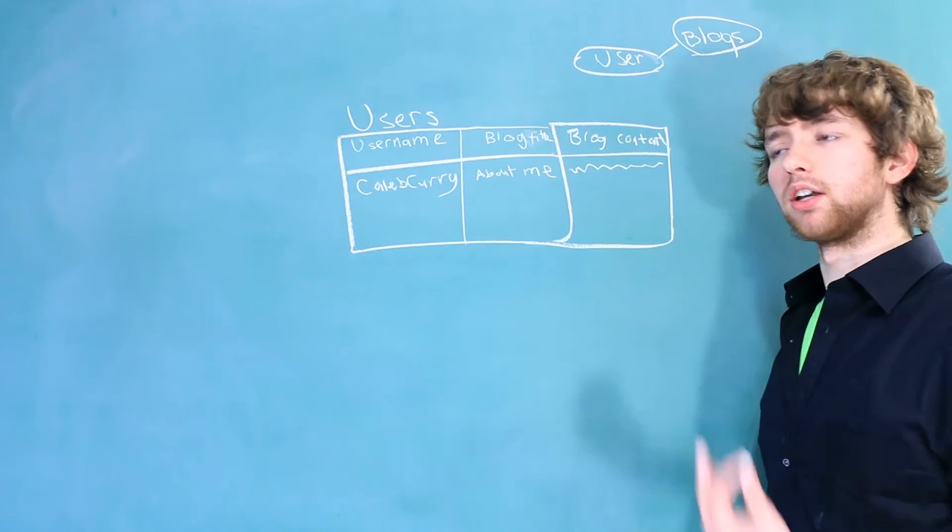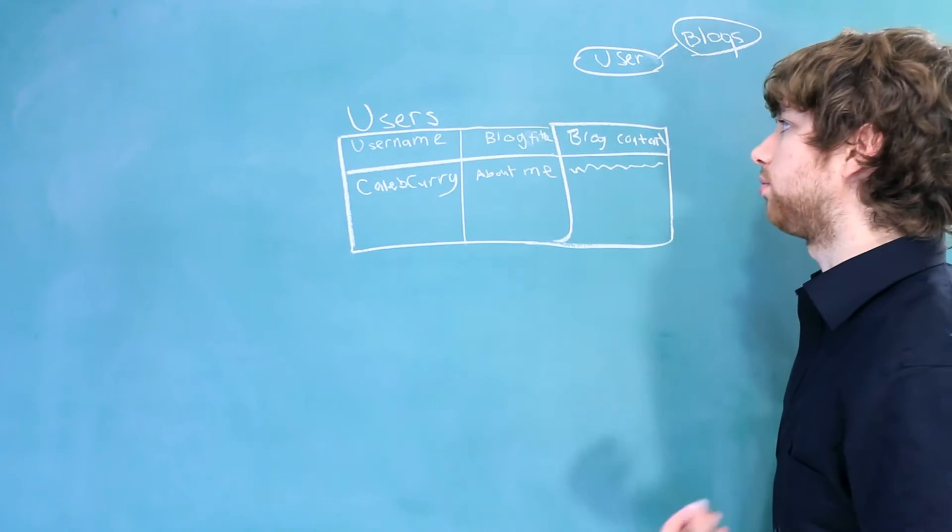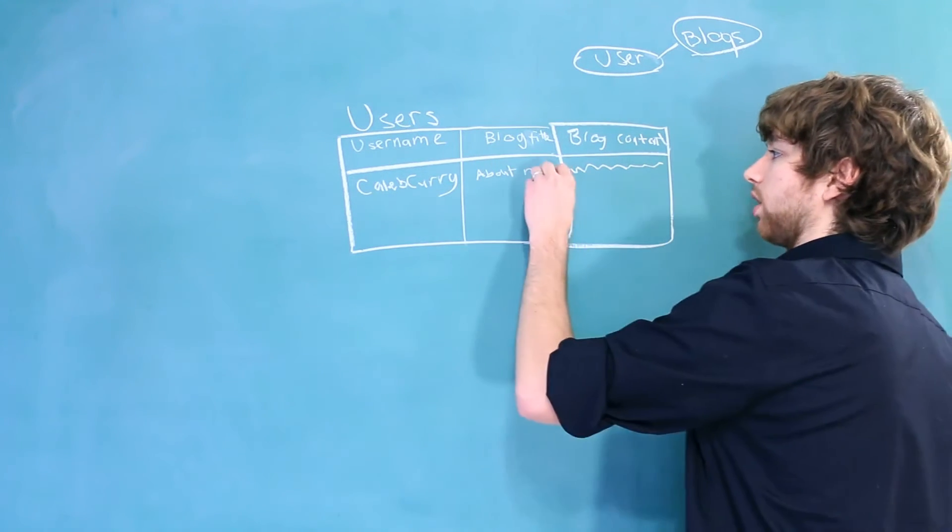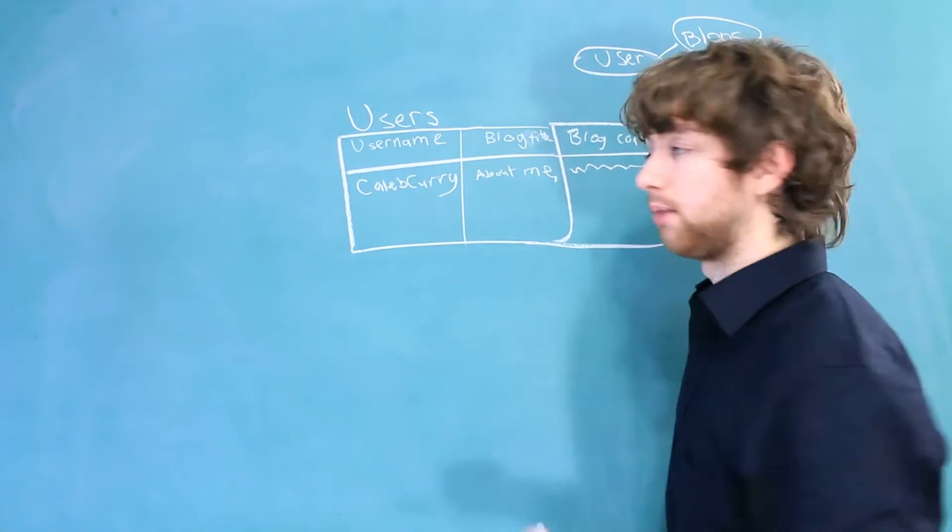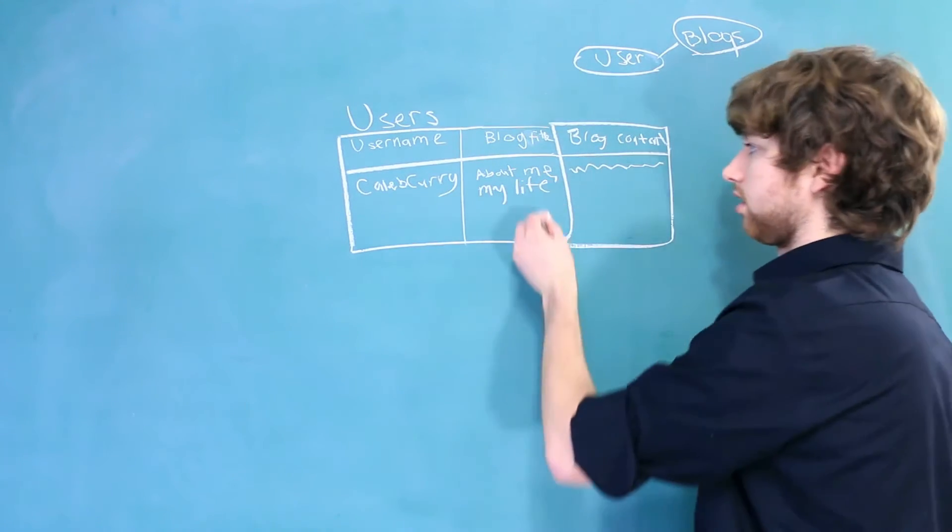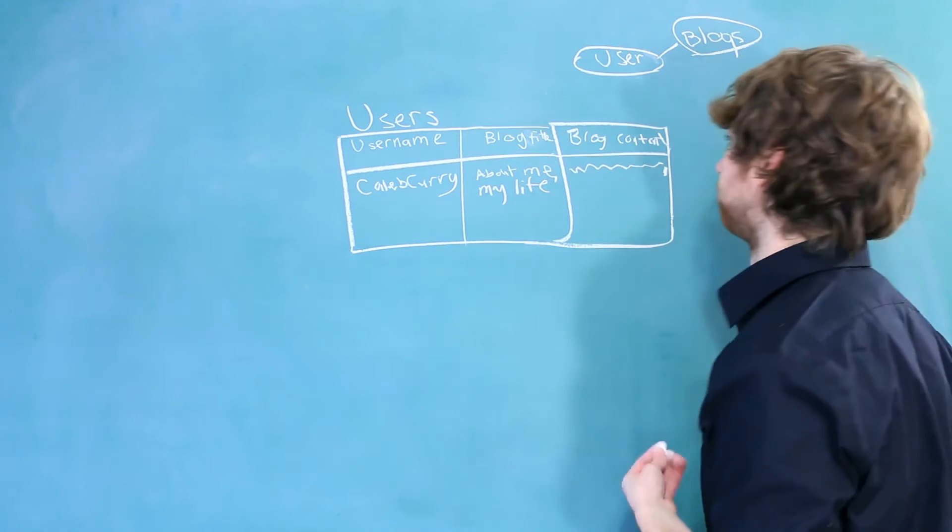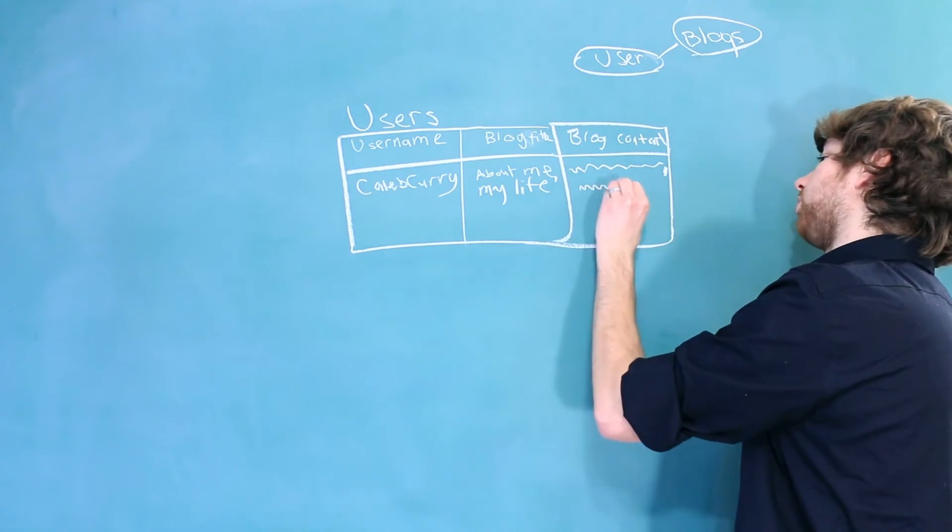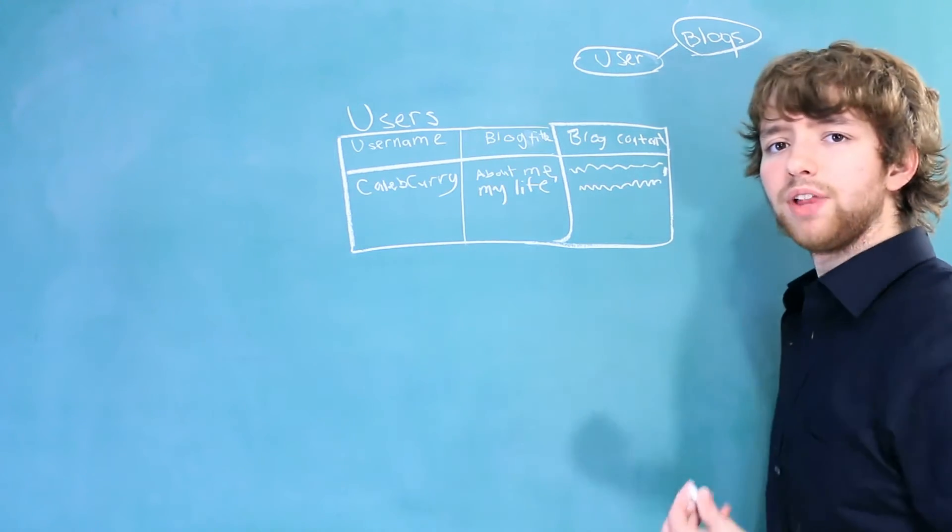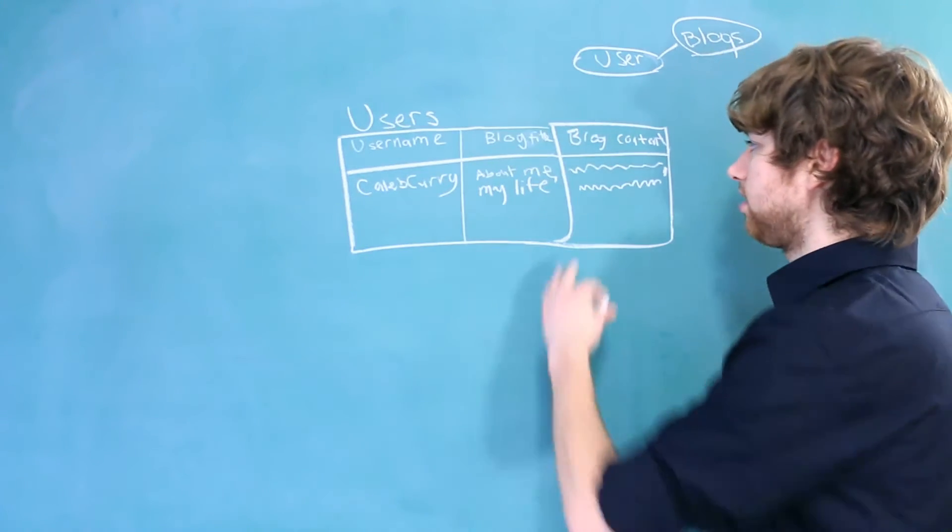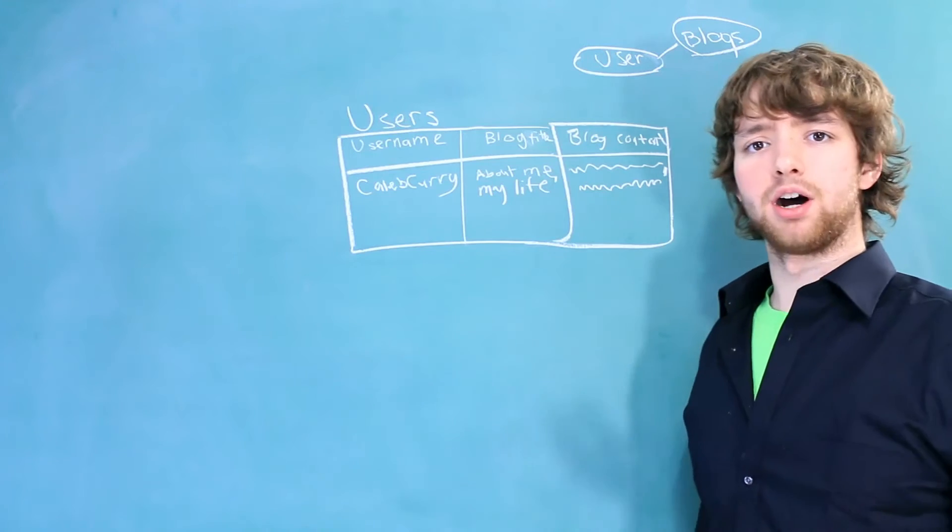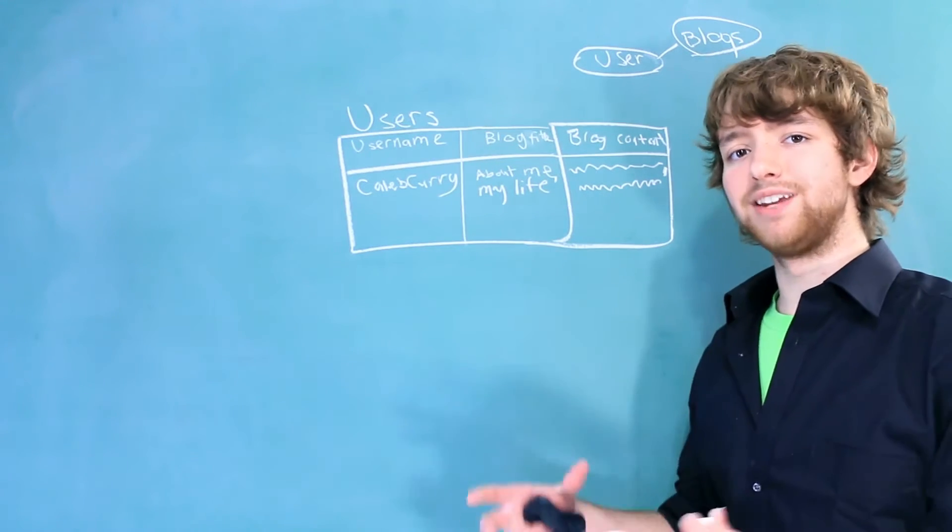Well, we could say, let's just throw a comma in here and put the next blog name. So now I have two blogs, my life, and then we'll just put a comma or something to separate the contents. And then we'll write the next blog. Well, that is also just really bad, because these values are no longer atomic. They're not their smallest, indivisible pieces.